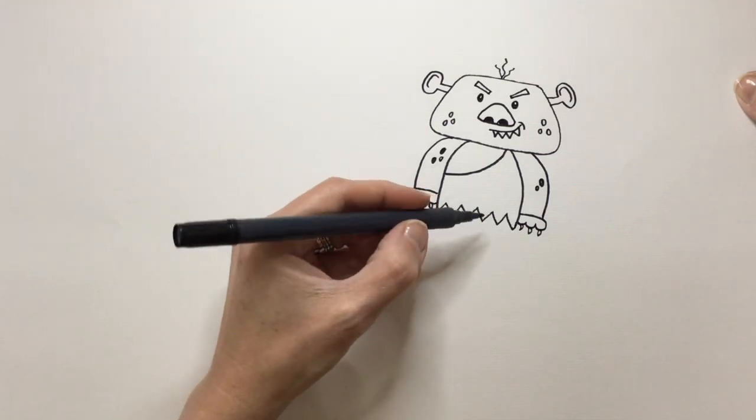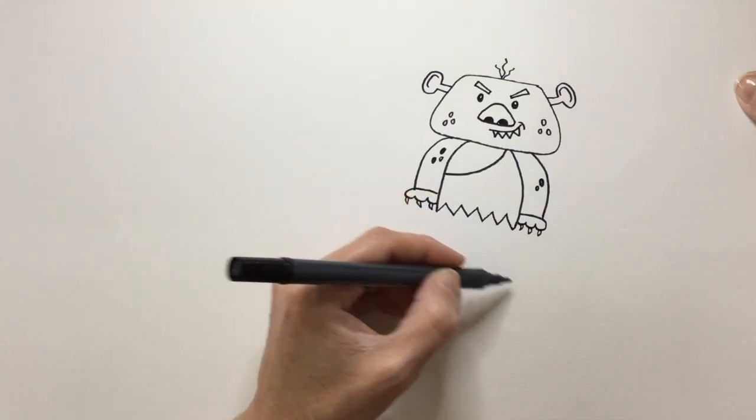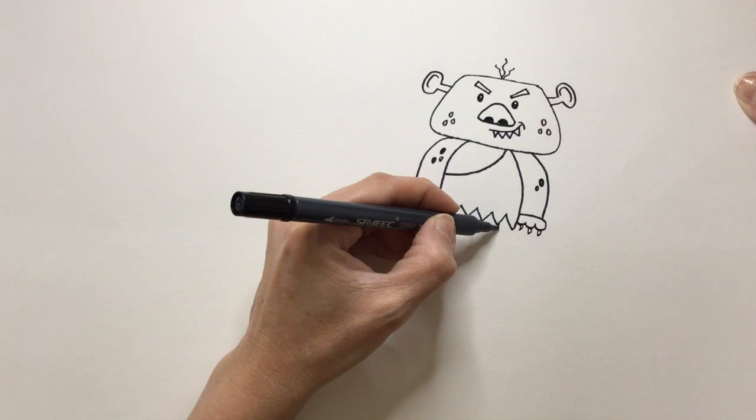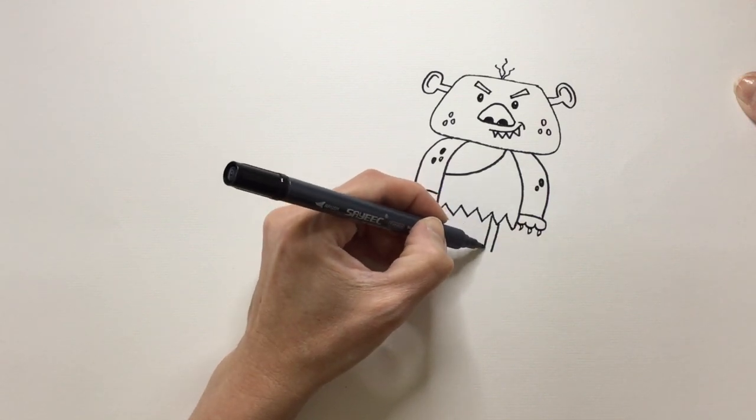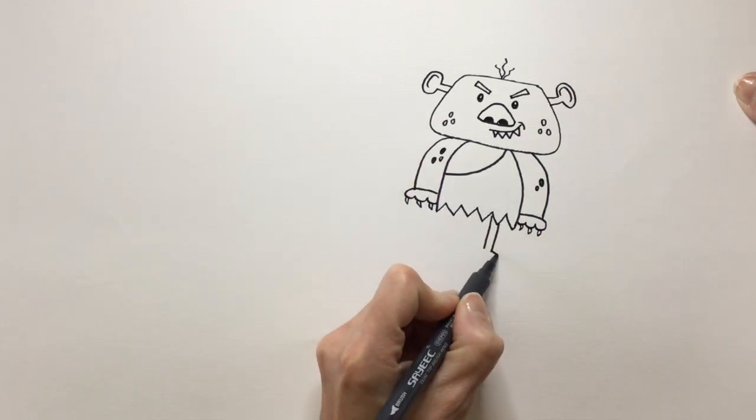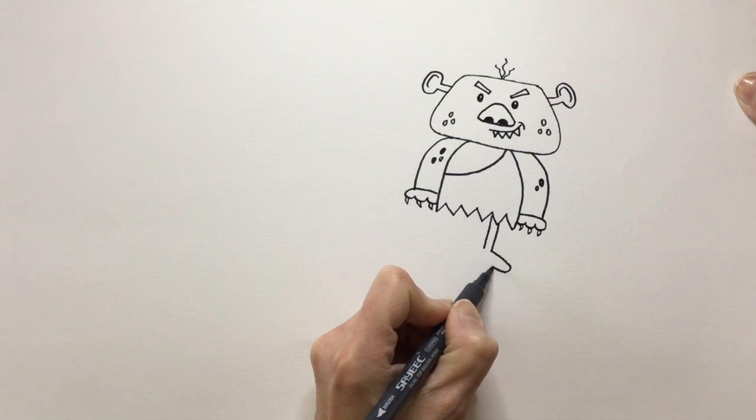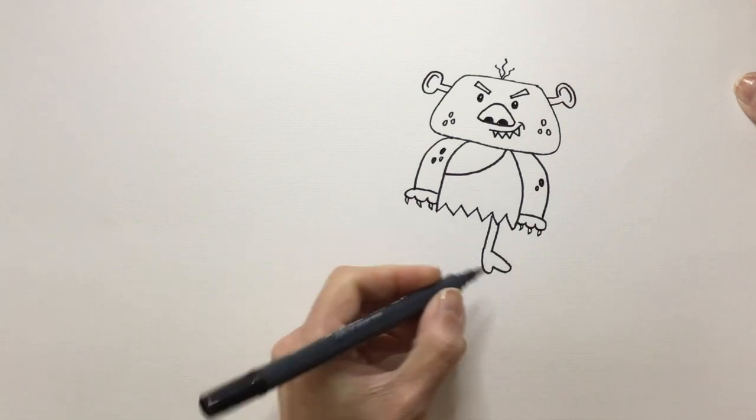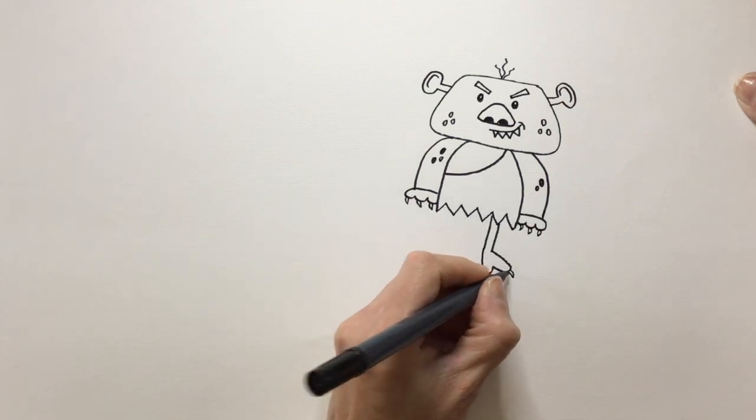His legs are spindly. So they're sticky legs. And then funny feet. I'm going to draw two lines. Two parallel lines going down. When I get to the bottom, I'm going to draw almost like a heart shape. And then I'm going to draw some claws on the end. There he is.